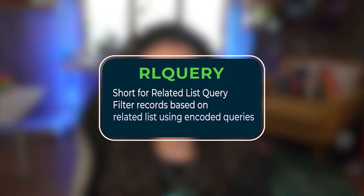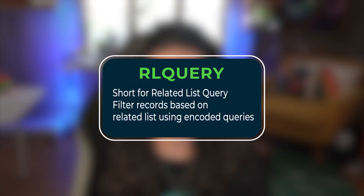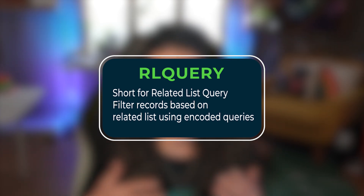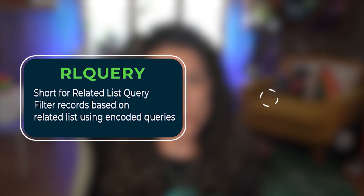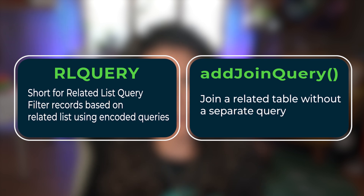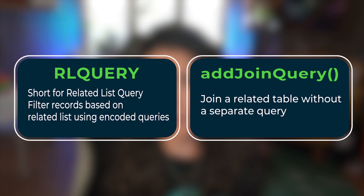Before we start, just a couple quick definitions before we dive into the code. If you already know the definitions of RL query and add join query, feel free to skip ahead to the next chapter. RL query, or related list query, lets you filter records based on related lists and encoded queries — instead of querying one table, then another, then joining all those results manually, RL query handles all that for you. Whereas add join query allows you to join a related table in a GlideRecord script without needing a separate query.